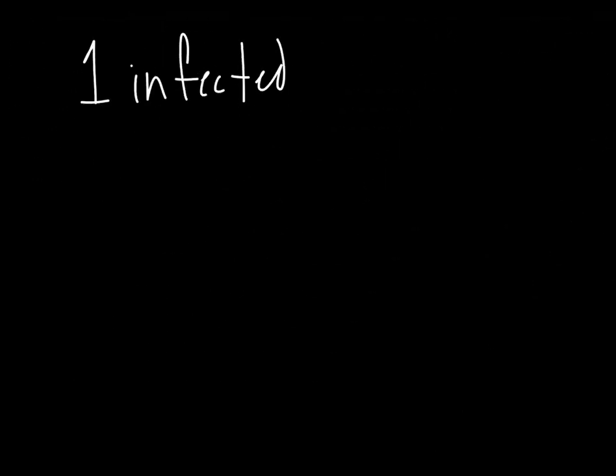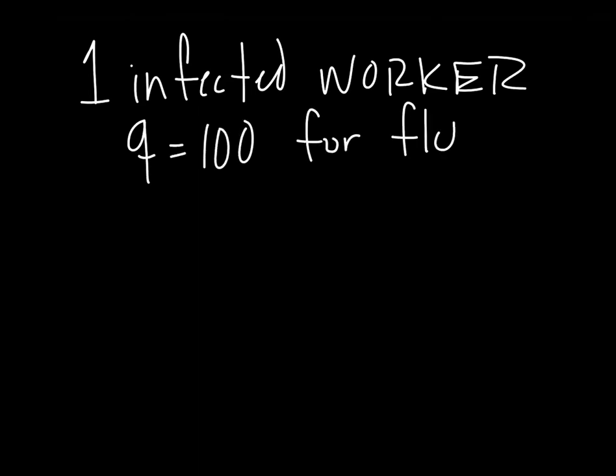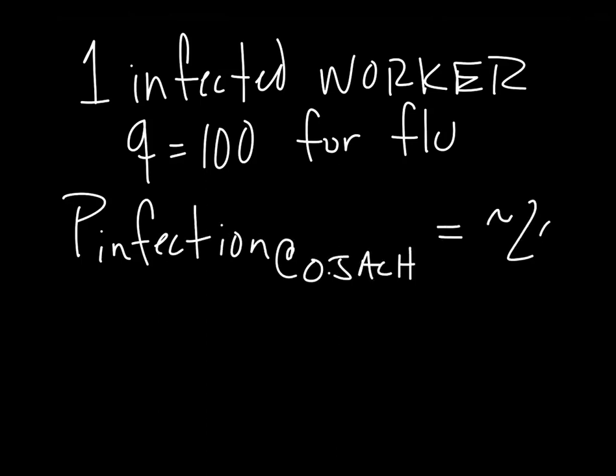With one worker infected with flu and a generation rate of about 100 per hour, the probability of one of their co-workers contracting an infection is approximately 20 percent, or 11 to 12 workers.